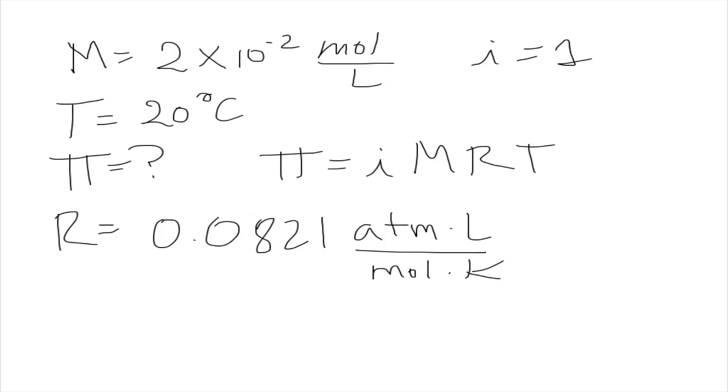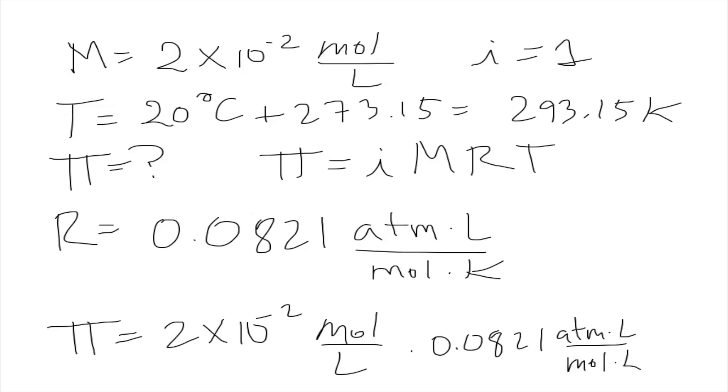The last thing we need to do is convert our temperature into Kelvin. So we add 273.15 to get 293.15 Kelvin. Then osmotic pressure is simply going to be the molarity, which is 2 × 10^-2 mol/L, times R, 0.0821 atmosphere·liter/(mol·K), times our temperature, 293.15 Kelvin.